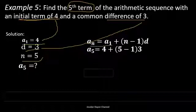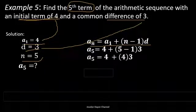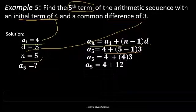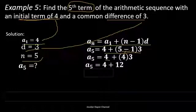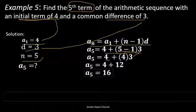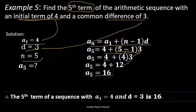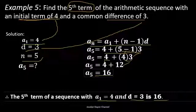We write the formula: a sub n equals a sub 1 plus the quantity of n minus 1 times d. Substituting: 4 plus the quantity of 5 minus 1 times 3. Simplify: copy 4, then 5 minus 1 equals 4. Bring down 3. Finally, copy 4, then 4 times 3 equals 12. So 4 plus 12 equals 16. Therefore, the fifth term of the sequence with first term 4 and common difference 3 is 16.